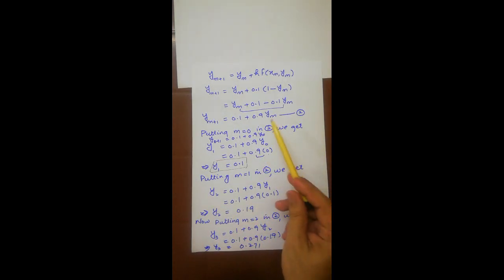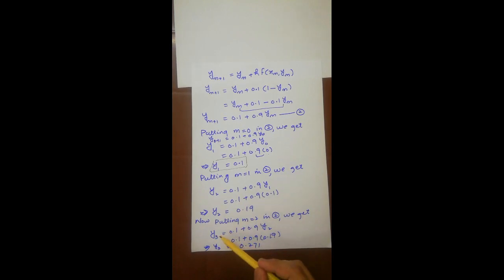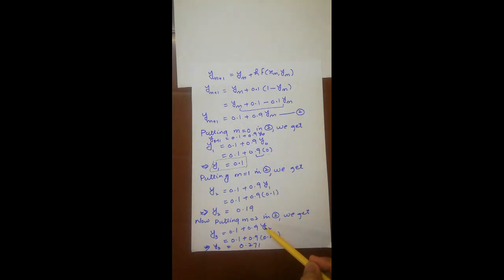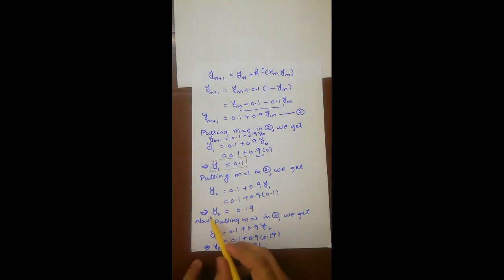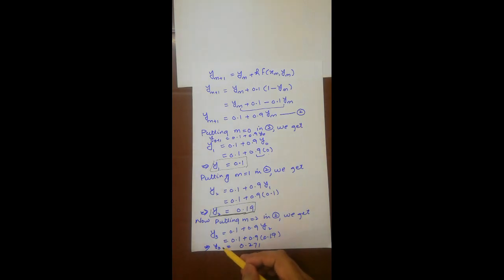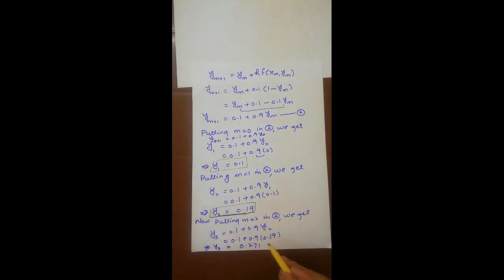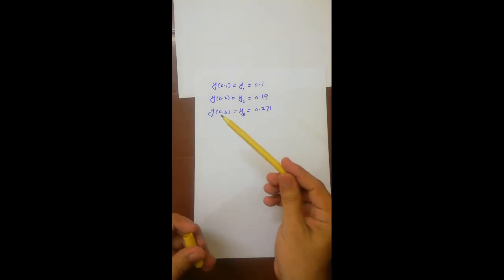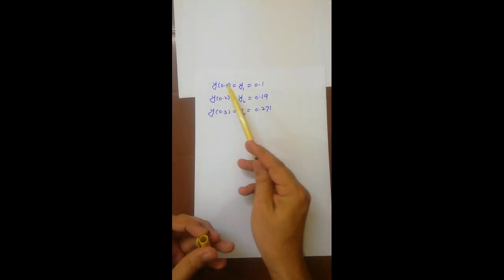Now put m = 2 into the formula. We get y₃ = 0.1 + 0.9·y₂. Since y₂ = 0.19, substituting gives y₃ = 0.1 + 0.9(0.19) = 0.27.